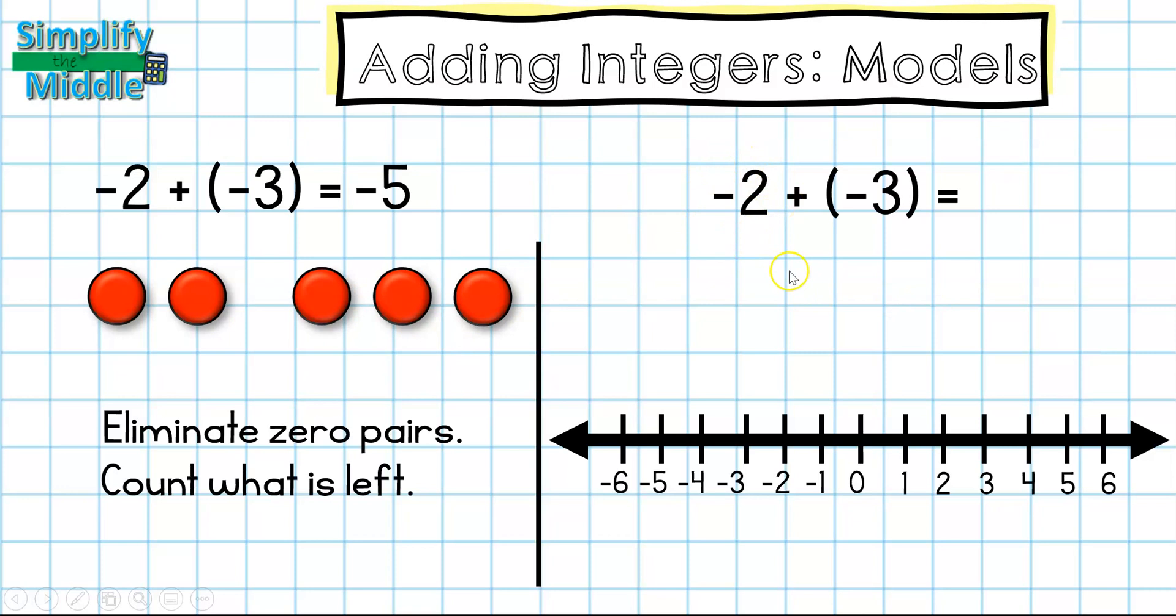Here I'm going to go two to the left so I'll start at my origin and go two to the left and then from there I'm going to go three to the left. I just put them in a straight line but you could stack this one if you wanted to and my answer is going to give me a negative five.